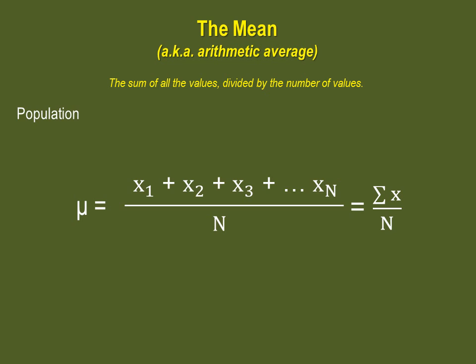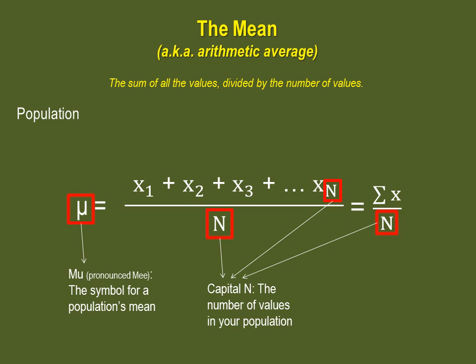The equation for calculating the mean of a population is not very different from the equation for a sample, but there are a few differences. Instead of x-bar, we have the Greek symbol mu, the symbol for a population's mean. And instead of using lowercase n, you will use capital N, which is the number of values in your population.